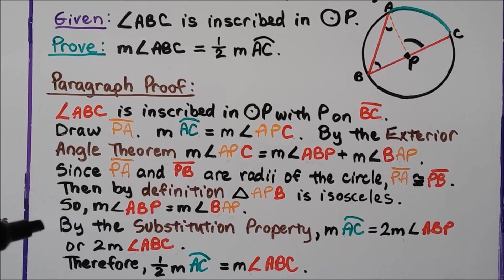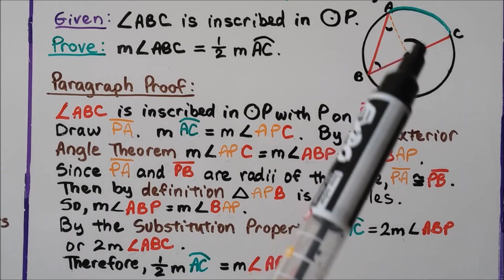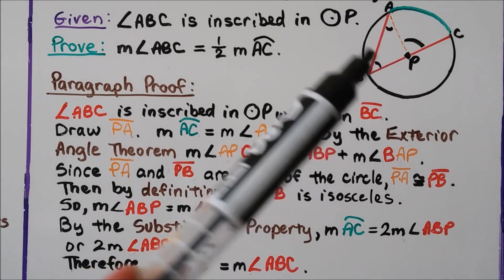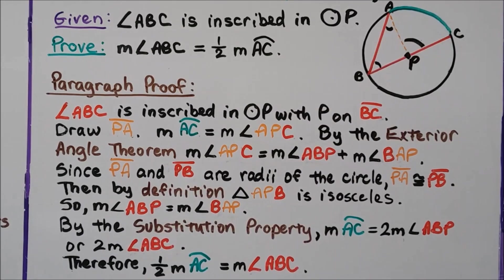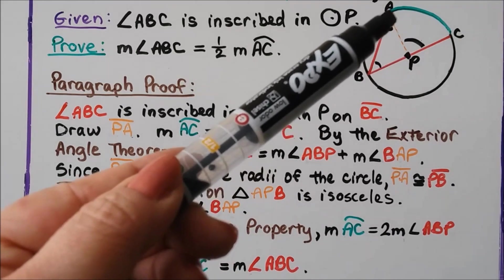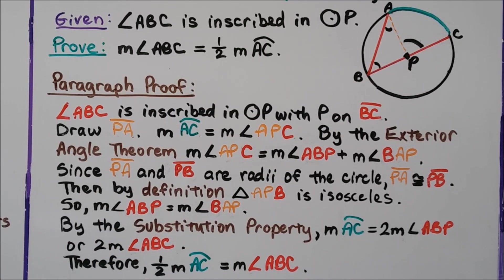By the substitution property, the measure of arc AC is equal to two times the measure of angle ABP. Therefore, half the measure of arc AC is equal to the measure of angle ABC. This completes the proof.